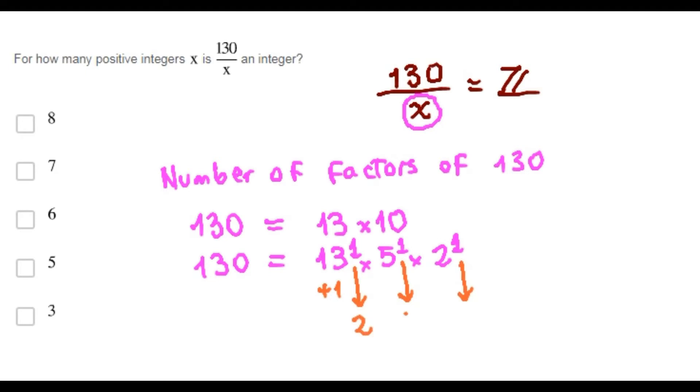1 plus 1 is 2, same way here, same way here. Finally, the number of factors of 130 is the product of these 3 integers.